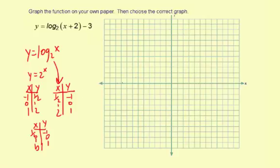Now I'm going to plot the points here. So 1 half and then negative 1, 1, 0, 2, 1.